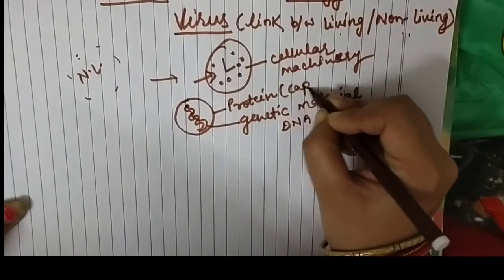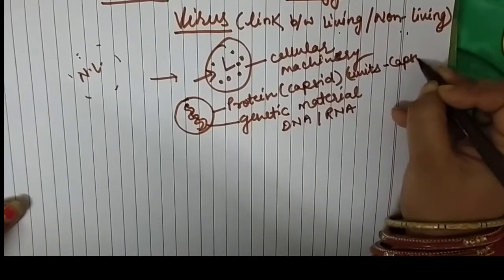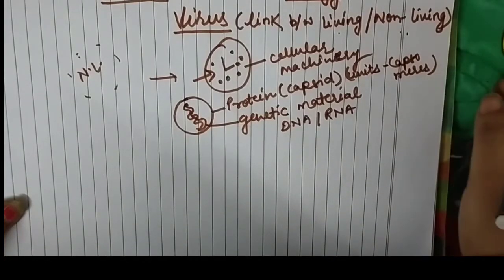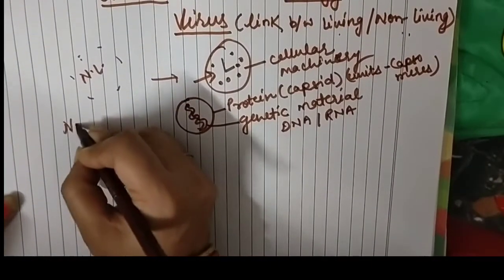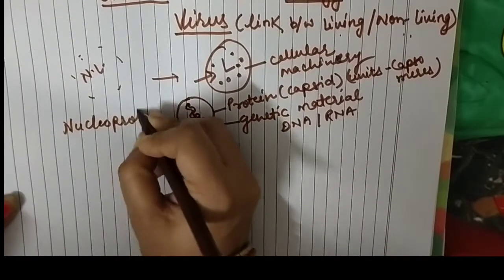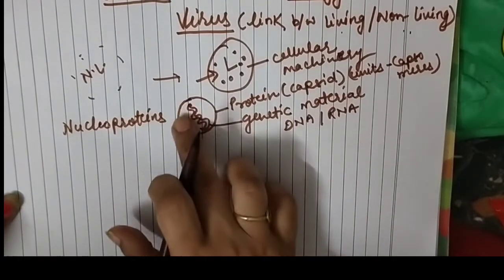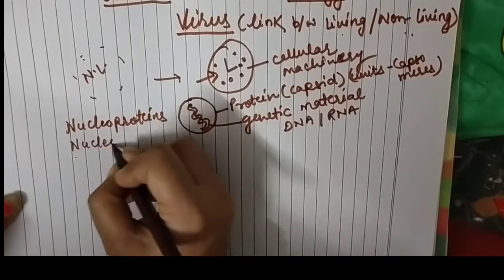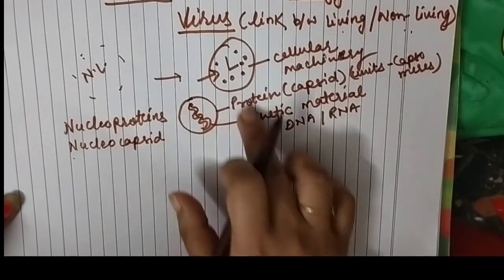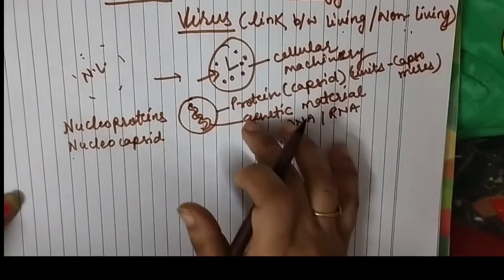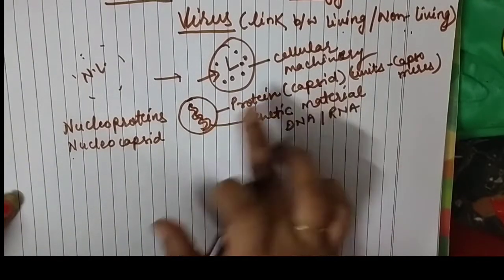This protein coat is called the capsid, and it is present in units. These units are known as capsomeres. A nickname given to viruses is nucleoproteins — 'nucleo' means nucleic acid, the genetic material, and 'proteins' refers to the covering. Another term used is nucleocapsid, where 'capsid' is the protein covering. So both names can be used for viruses: nucleoproteins or nucleocapsid.